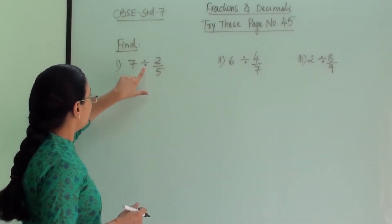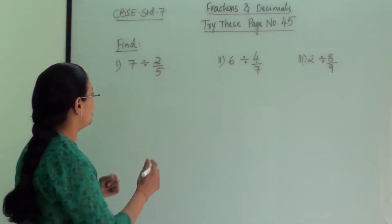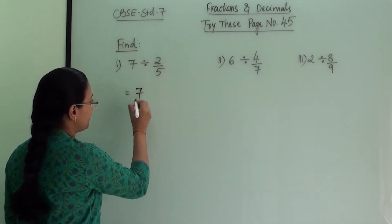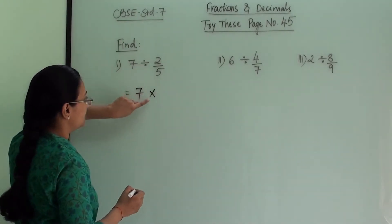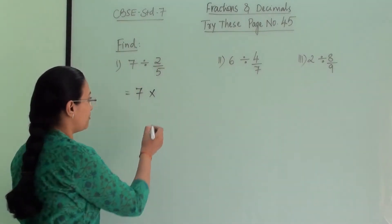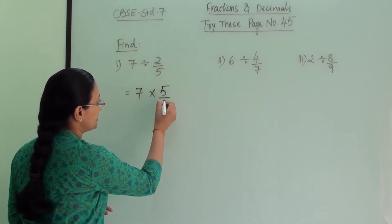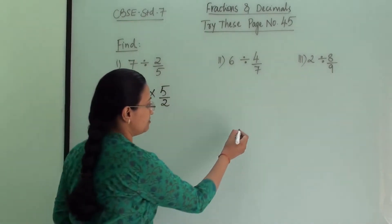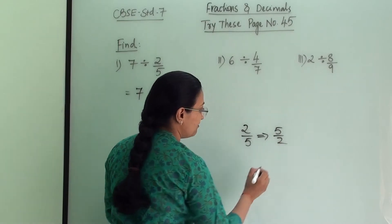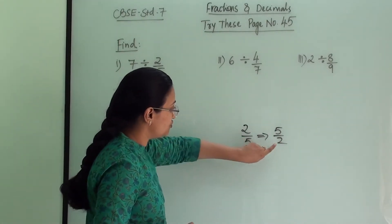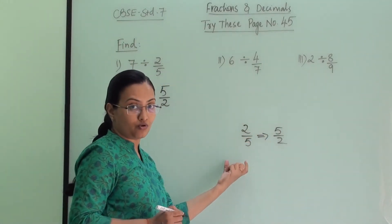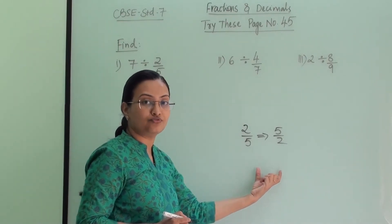First is 7 divided by 2/5. As per the two steps, this is a whole number divided by a fraction. So first we write 7, then change the division sign to multiplication, and take the reciprocal of the second number. The reciprocal of 2/5 is 5/2 — numerator becomes denominator and denominator becomes numerator.